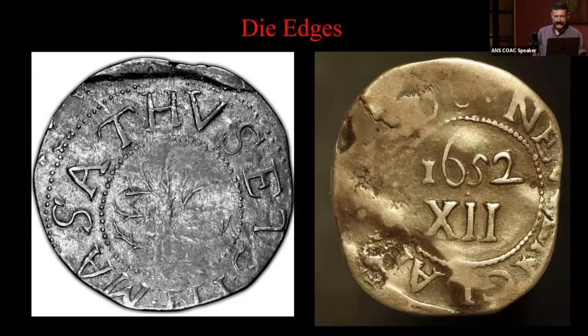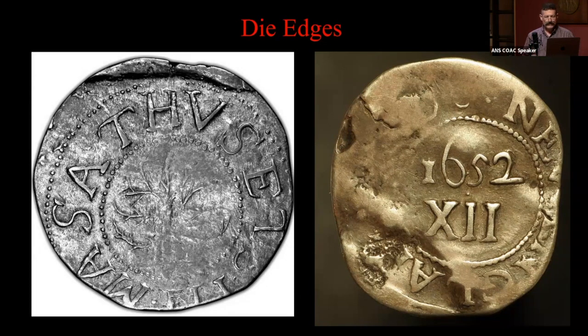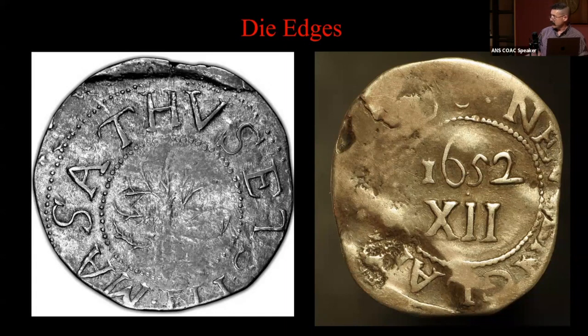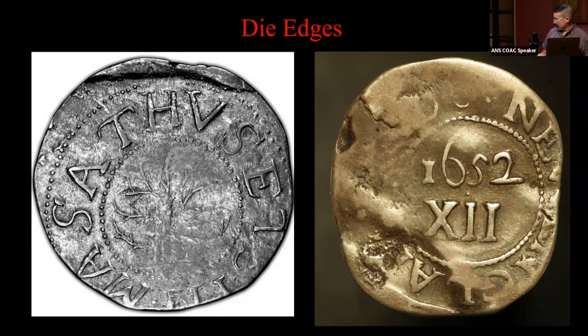As far as the shape of the dies, the two examples up on the screen show whatever coins, but if you look at the Noe 5 oak tree, you'll see part of the top of the die here, and on this piece you'll see part of the perimeter of the die down here. This suggests the die was round, and this suggests the die was kind of squarish.